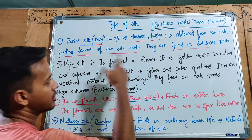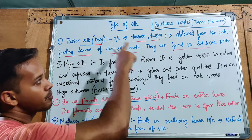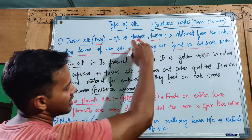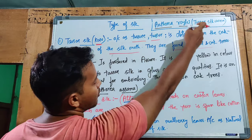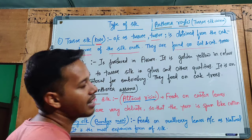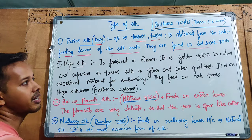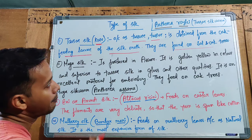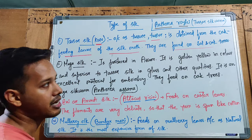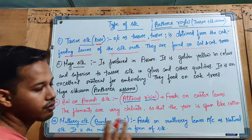Tassar silk is produced by the Tassar silkworm. Its scientific name is Antheria royale. The scientific name is very important to remember for exams.